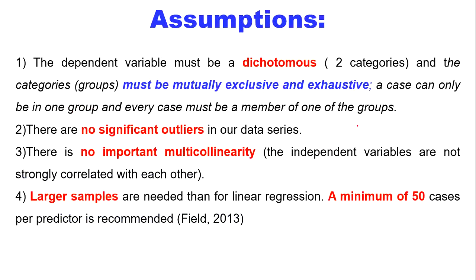Three assumptions should be satisfied. First, the dependent variable must be dichotomous — that is, categorical — and the categories must be mutually exclusive and exhaustive, meaning a case can only be in one group and every case must be a member of only one group. Second, there should be no significant outliers in the data. Third, there should be no important multicollinearity, meaning the independent variables are not strongly correlated with each other.